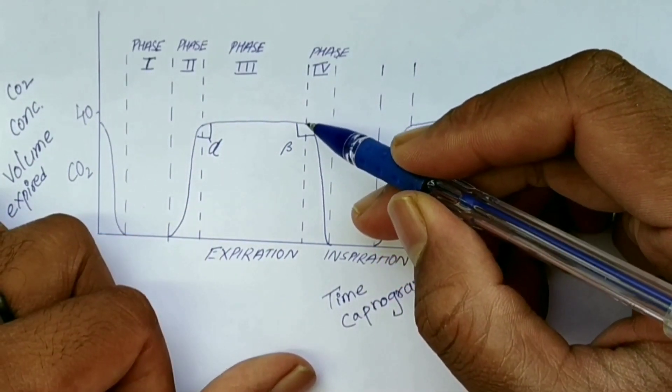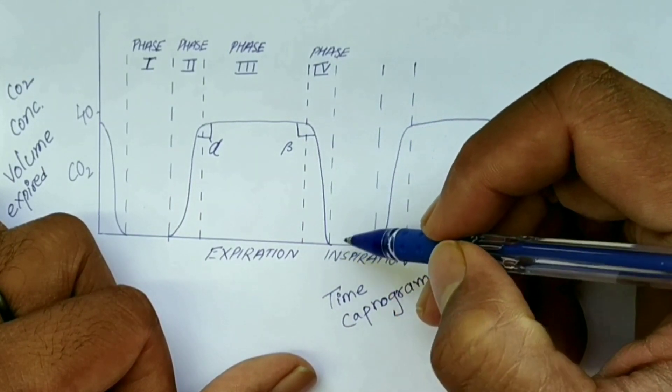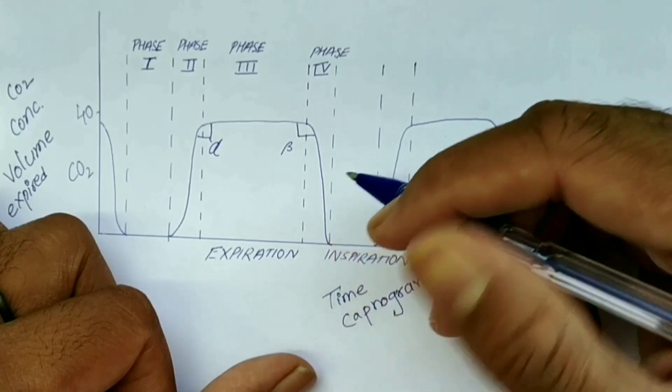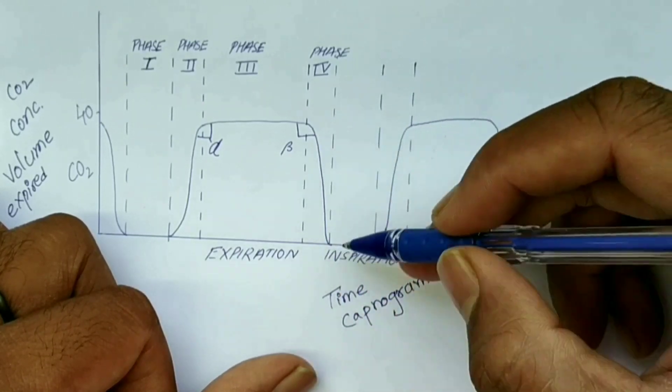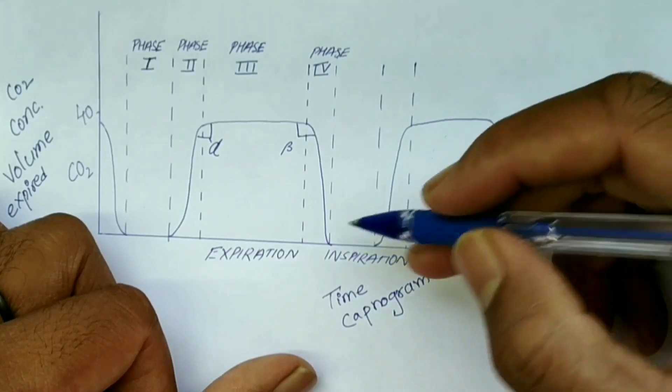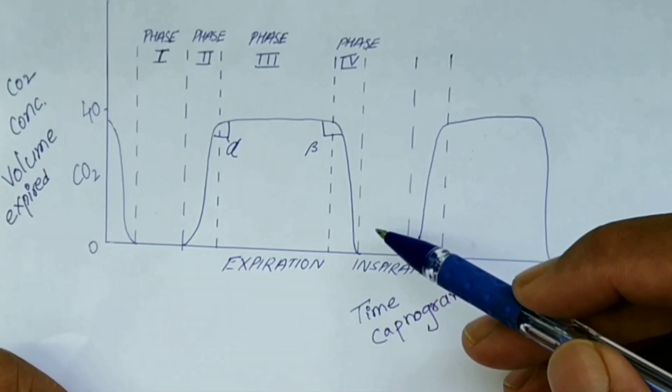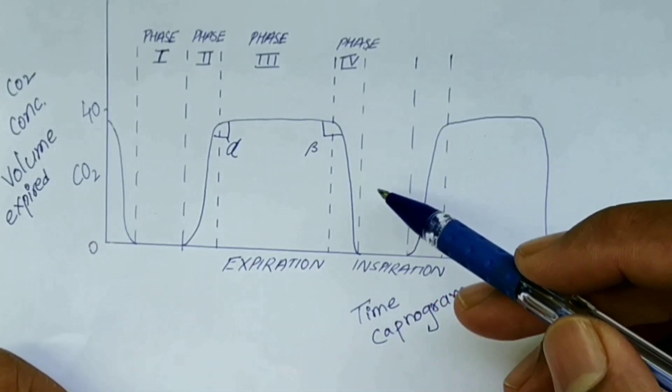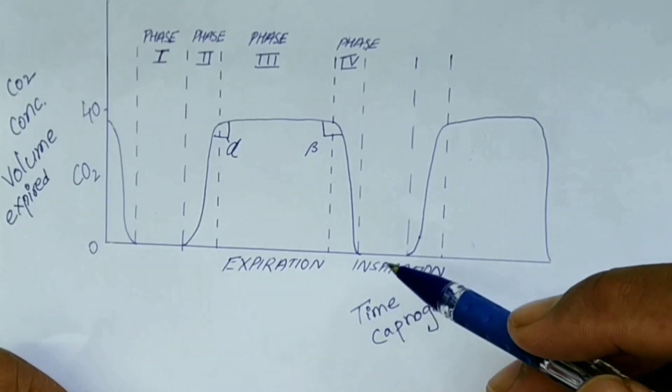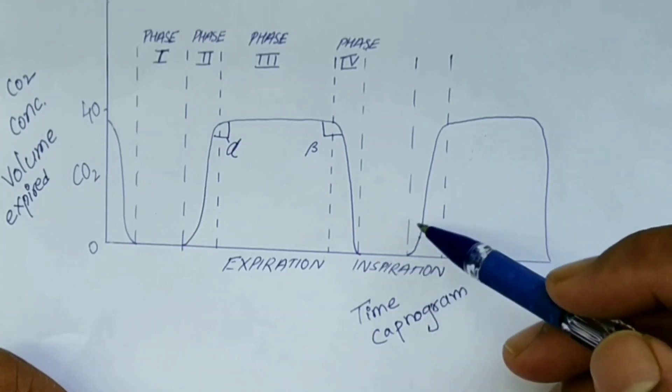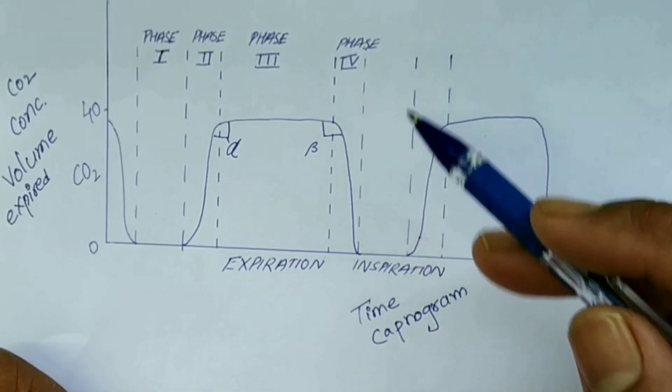Phase four: there is a rapid decrease of CO2 due to the inhalation of fresh gases, and the alveoli have fresh gaseous exchange and CO2 concentration decreases. The inspiratory phase, or inspiratory segment, shows a descending curve that makes almost a right angle turn and rapidly descends to the baseline. This represents the inspiratory phase during which fresh gases, CO2-free gases, are inhaled and CO2 concentration falls rapidly to zero.